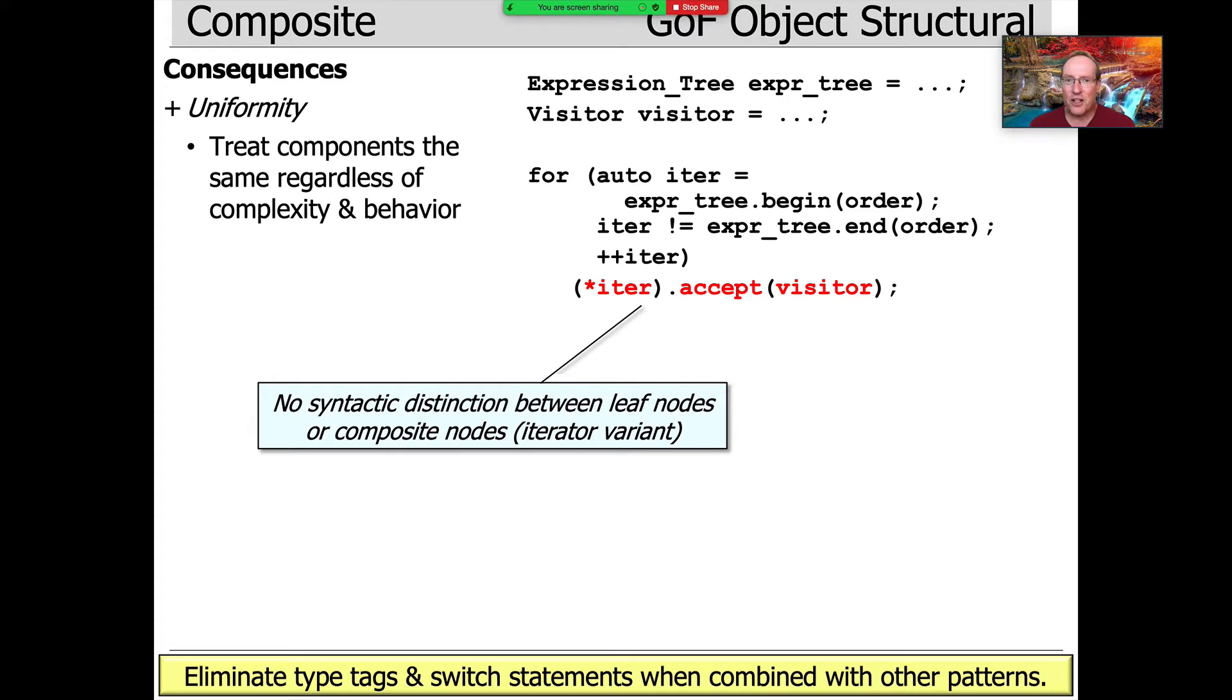We're going to use the iterator pattern to iterate through every element in an expression tree that we've created using some creational pattern we'll talk about later. And for every node in the tree, we're going to accept a visitor to come perform an operation on that node. Notice how this code does not distinguish between leaf nodes or composite nodes. It just lets you iterate through the tree in whatever order you designate and applies the operation, in this case, the visitor. And we don't even know what that does.